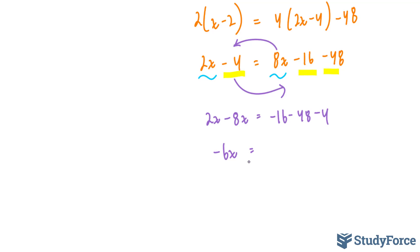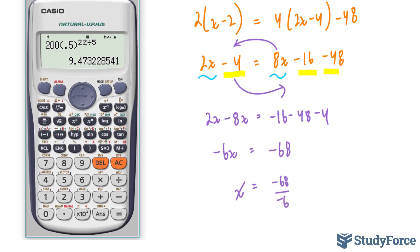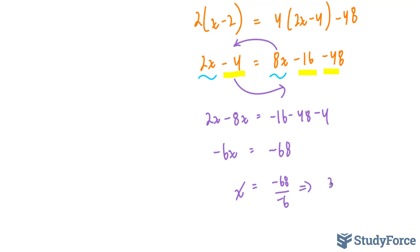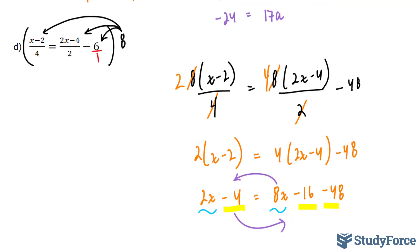Isolating for x, I divide both sides by -6. And let's use our calculator for this. 68 ÷ 6. Notice how I'm not including the negatives, I don't need to because I know they're going to cancel out. And I end up with 34/3. And that is the solution to Part D.